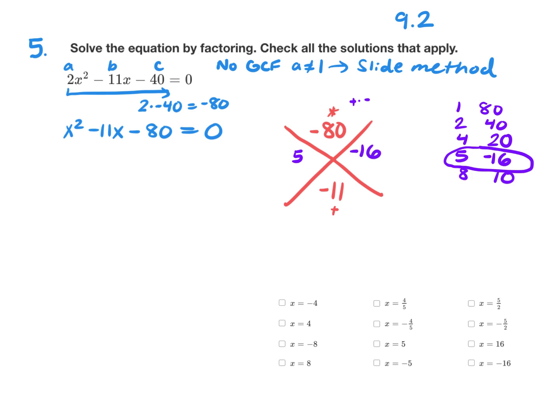To get our solutions, we need to undo the multiply by a from the slide method by dividing by a. So I'm going to divide each of these by 2 and simplify the results. 5 divided by 2 is already simplified. Negative 16 divided by 2 is negative 8. So now my two factors are x plus 5 over 2 and x minus 8.